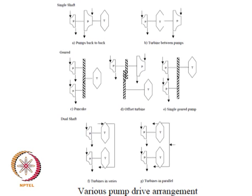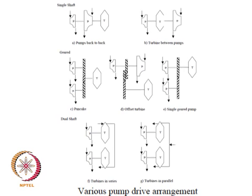There are other arrangements. One is known as the pancake arrangement. In this arrangement there is a turbine between the pumps. The turbine and the pumps are run at different RPM and are connected through a gear train. In the first arrangement there is no gear train, so whatever RPM the turbine runs at, the same RPM drives the pumps. In the pancake arrangement you have extra control over the RPM of the pumps.